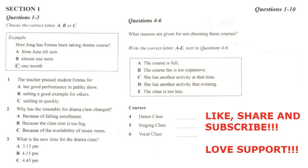Now turn to Section 1. You will hear a telephone conversation between a teacher from the art centre and a female student's father about her art courses. First, you have some time to look at questions one to three. You will see that there is an example which has been done for you. On this occasion only, the conversation relating to this will be played first.